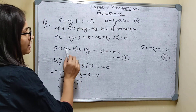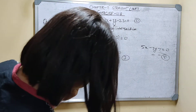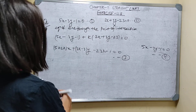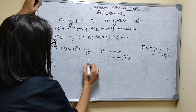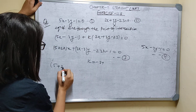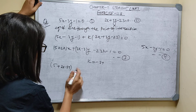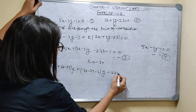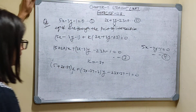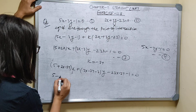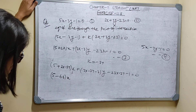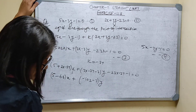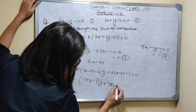Now substitute K equals minus 34 into equation 3. So: 5 plus 2 times (minus 34) gives 5 minus 68 equals minus 63. And: 3 times (minus 34) minus 3 gives minus 102 minus 3 equals minus 105. The constant: minus 23 times (minus 34) minus 1 gives plus 782 minus 1 equals plus 781. So the equation becomes: minus 63x minus 105y plus 781 equals 0.